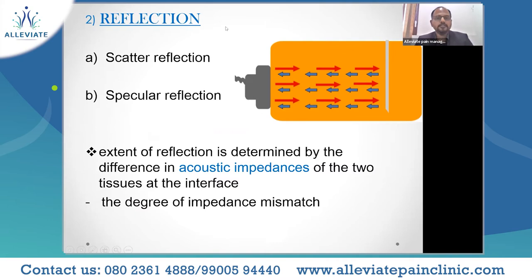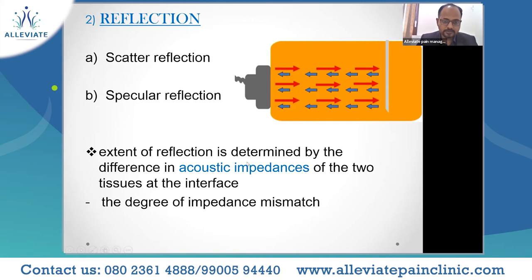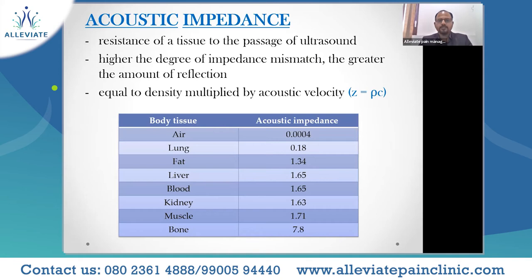Another part of attenuation: the ultrasound waves get reflected. There are two kinds of reflection — scattered reflection and specular reflection — based on what kind of surface the ultrasound encounters as it passes through tissues. The extent of reflection is determined by the difference in acoustic impedance of the two tissues at the interface. Acoustic impedance is the resistance of a tissue to the passage of ultrasound. Higher the degree of impedance mismatch, the greater the amount of reflection.